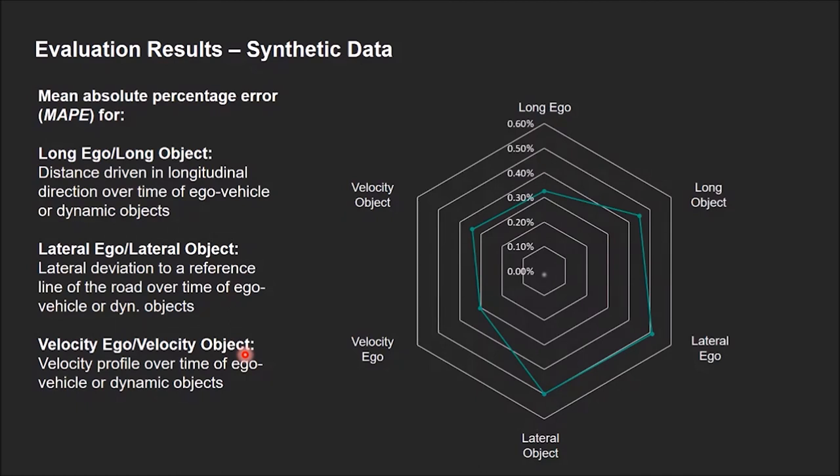Applied to the generated simulation data as mentioned before, here you can see the results. As you can see, the X-in-the-loop results match the generated data pretty good, as the error for all characteristics is in an error of 0.5%. The errors describing the longitudinal behavior are even a little lower, as you can see here.